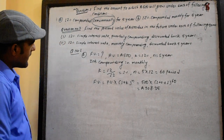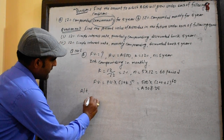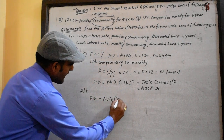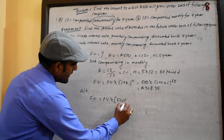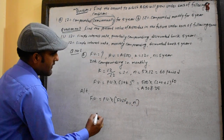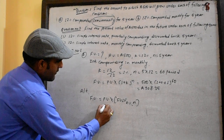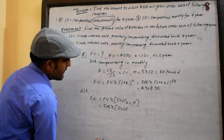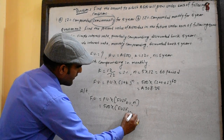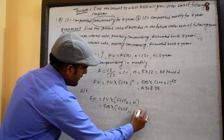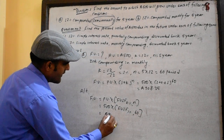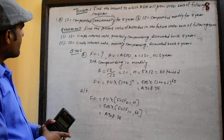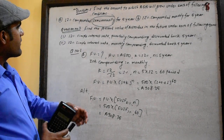We also take the future value using the alternative method: FV equals PV times FBIF at k percent for n years. PV is 500 times FBIF at 1% for 60 periods. This gives 908.358. That completes question number 1.